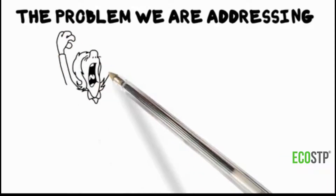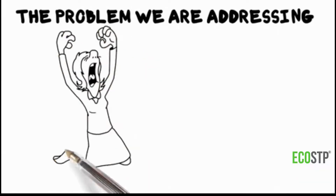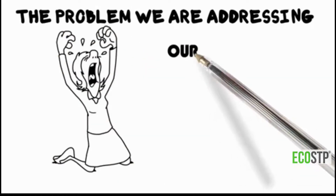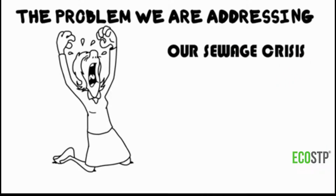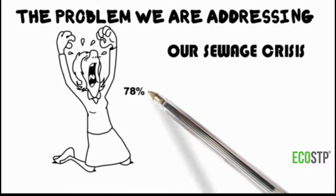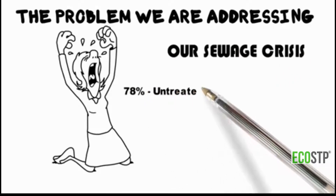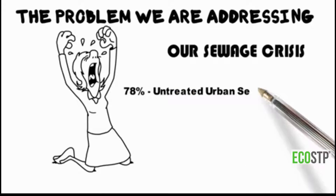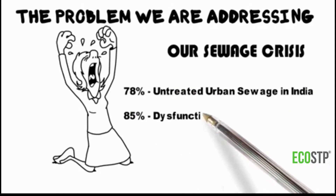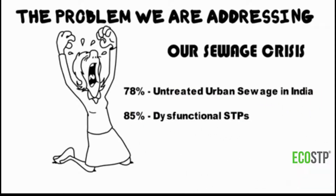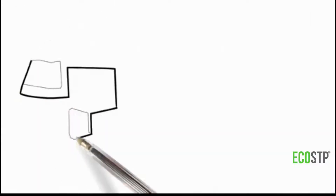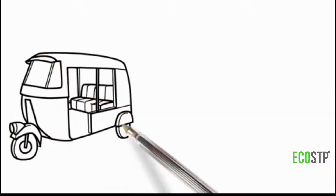Sewage is dumped directly into water bodies, polluting India's surface water resources. 78% of urban India's sewage is untreated — it is a huge problem. Unfortunately, the majority of installed sewage treatment plants are also not working. This is a real crisis facing us.